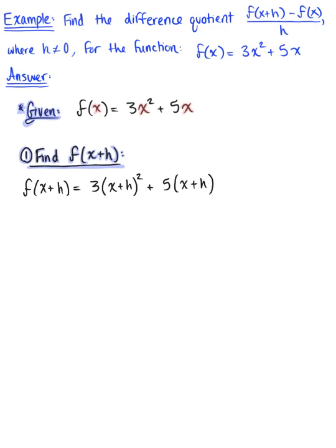So we have replaced every x with x plus h. Now what we need to do is simplify. With this first term, we're going to leave 3 on the outside and expand this square. We have x plus h squared, which can be rewritten as x plus h multiplied by x plus h.